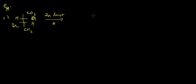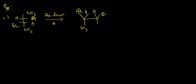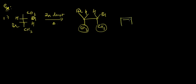Looking at the sawhorse formula, for the first carbon we have Br, H, and CH3, and for the second carbon we have H, Br, and CH3. Both of the CH3 groups are cis to each other — on the same side — so we will have formation of the cis alkene product.